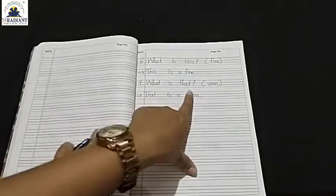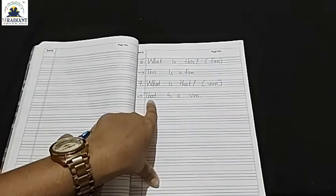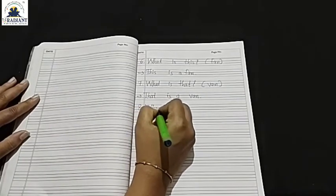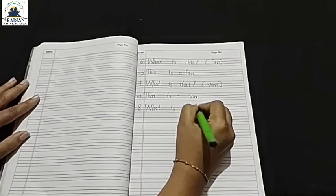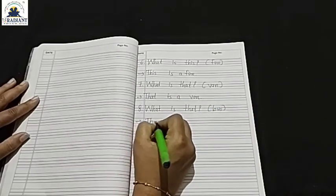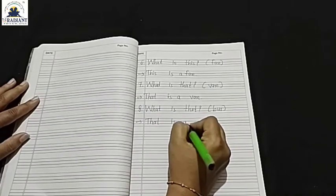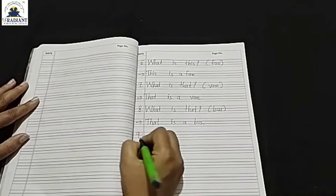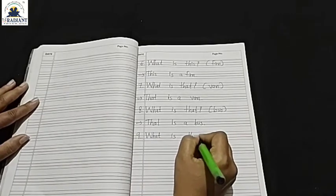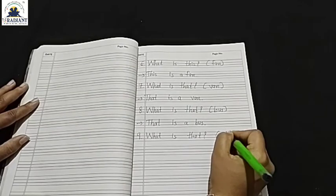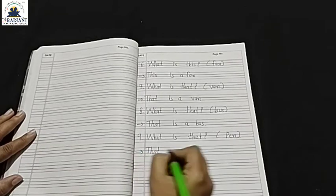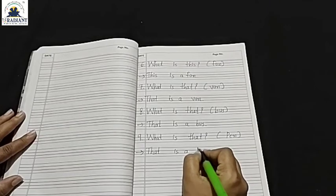Friends, here last — that — appreciate your answer — that — start friends. Number nine: what is that? Bus. Appreciate your friends. So that is a bus. And last friend, what is that? Bus. So the answer: that is a bus.